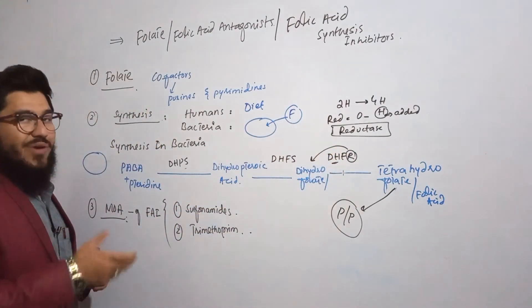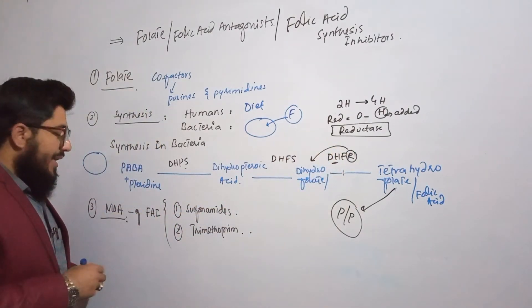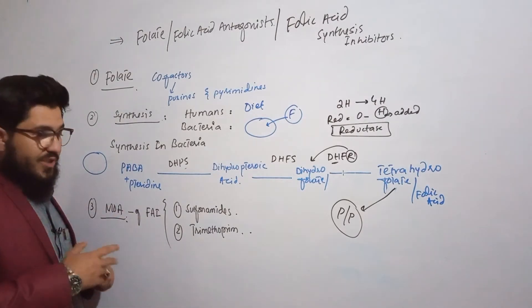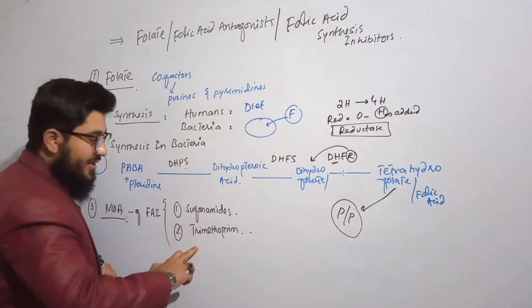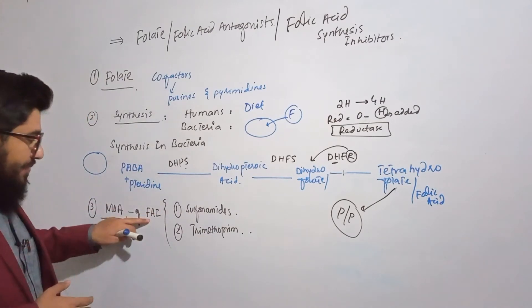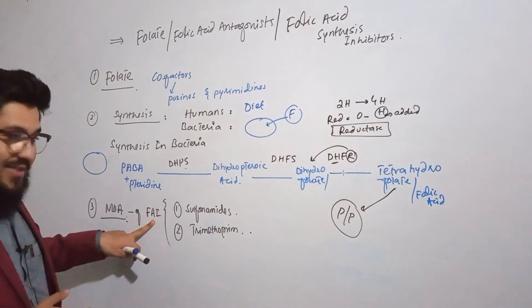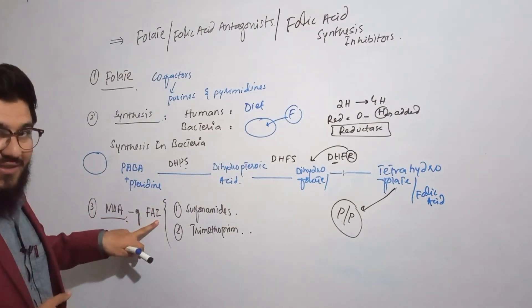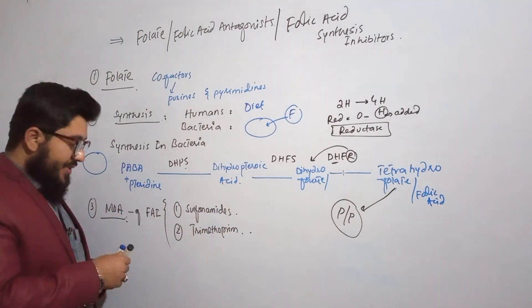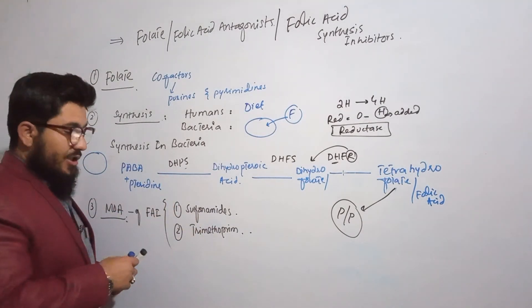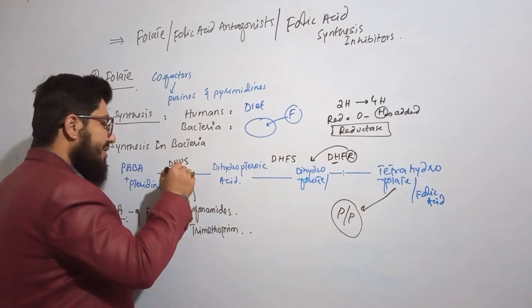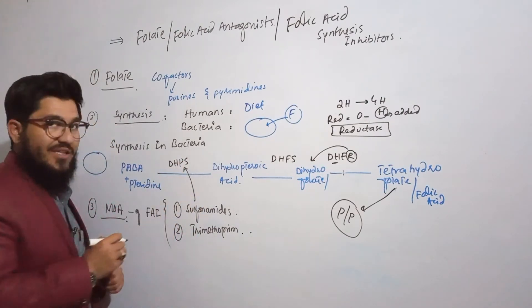To summarize the three enzymes: the first is dihydropteroate synthase, the second is dihydrofolate synthase, and the third is dihydrofolate reductase. Now, the mechanism of action: sulfonamide interacts with the enzyme dihydropteroate synthase, acting as a substrate for this enzyme.